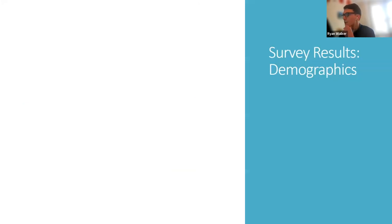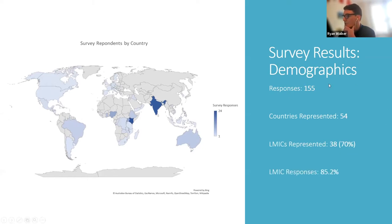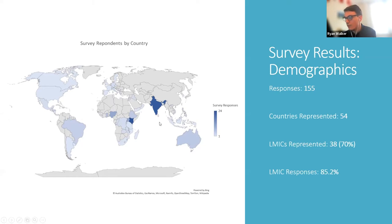In terms of demographics, the survey received 155 responses from 54 countries, as shown on this Atlas chart. Of those 54 countries, 38 were lower middle income countries — around 70% — but the key figure is that of the overall 155 respondents, 85% were based in lower middle income countries. Of those based in high income countries, they were asked to identify their interest in pharmacovigilance in LMICs, ranging from active or previous work supporting pharmacovigilance activities to a passive interest in the subject.